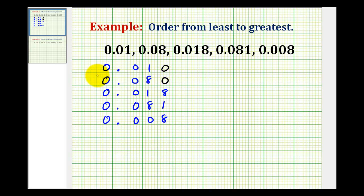Now that they all have the same number of digits to the right of the decimal, we can see here that eight thousandths would be the smallest, followed by ten thousandths, and then we have eighteen thousandths, eighty thousandths, and the largest decimal is eighty-one thousandths.